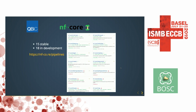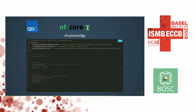We currently have 15 stable pipelines for various applications, 18 more in development, with about 60 people actively working across genomics, proteomics, and more. People can also submit a config profile for their own infrastructure to the NFCore configs repository - just provide a description of your configuration, specify Singularity or Docker, define your cluster scheduler job submission and node computational power, and you can run any NFCore pipeline on your cluster automatically.